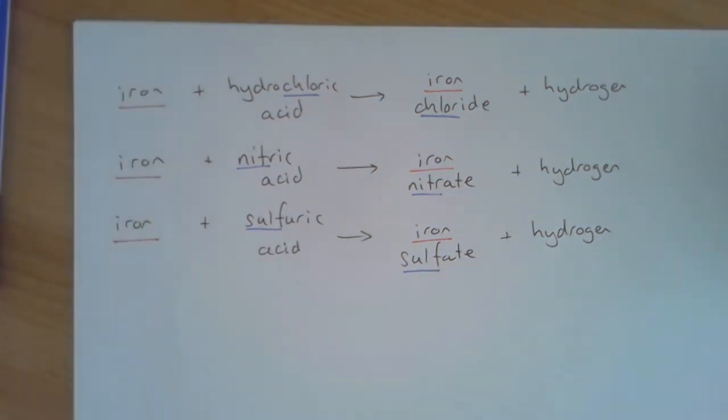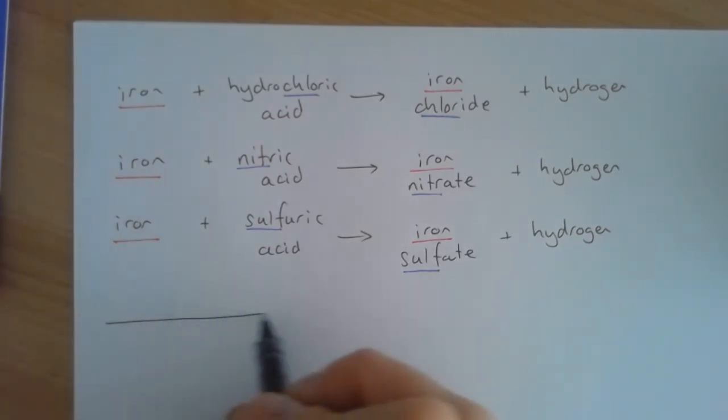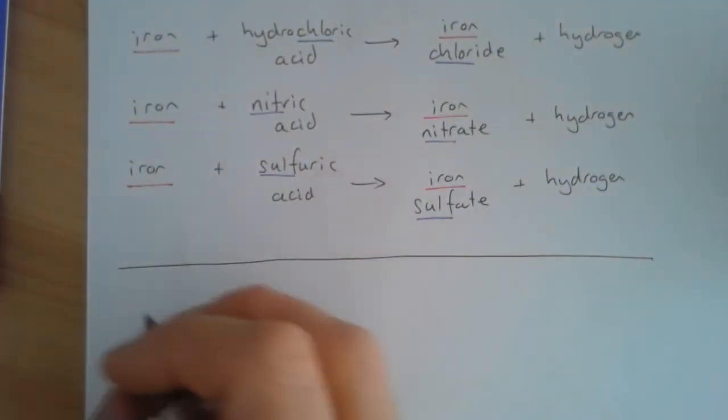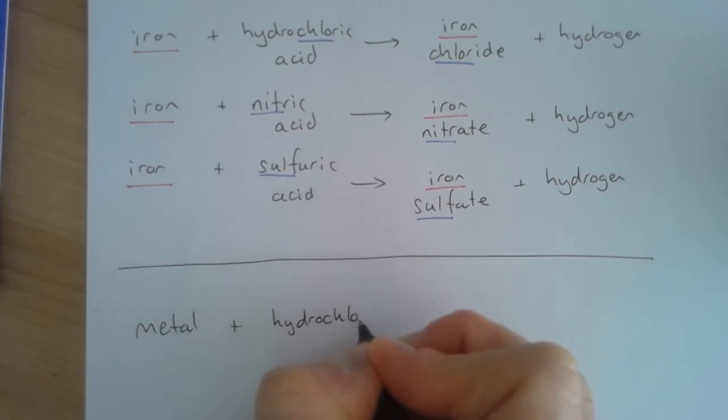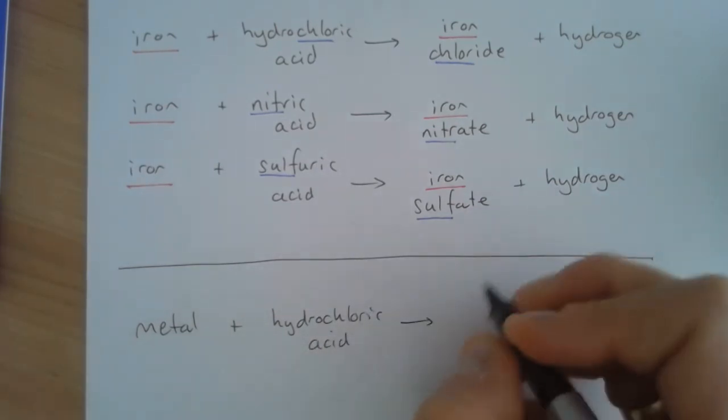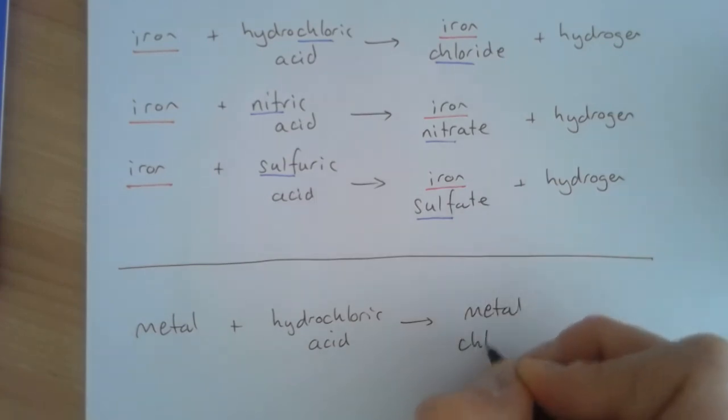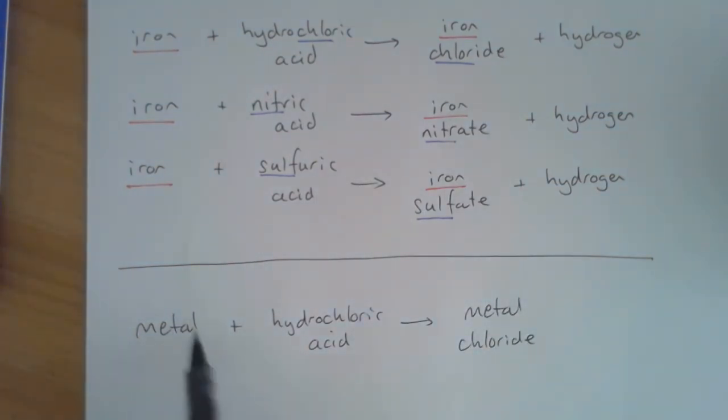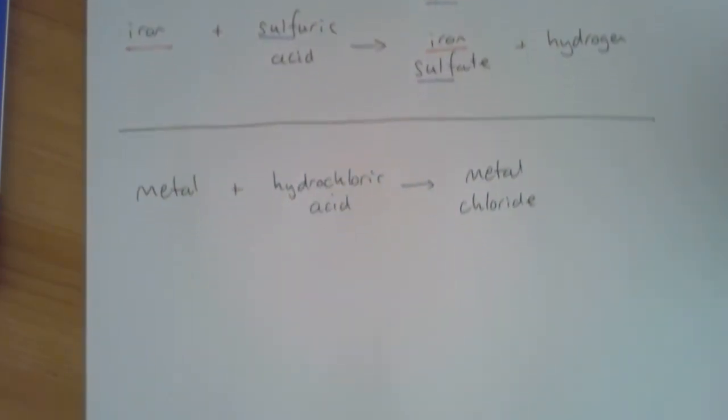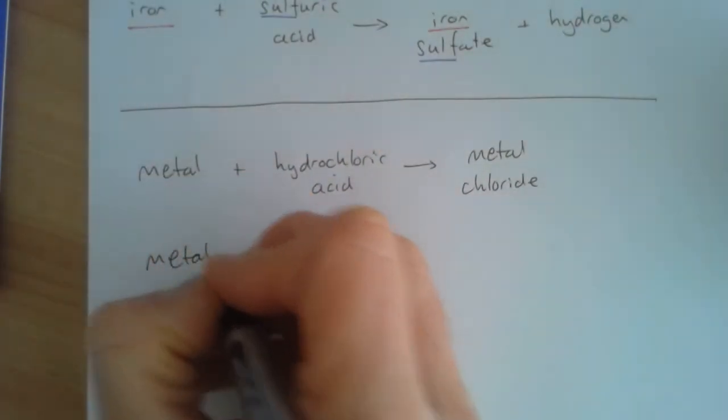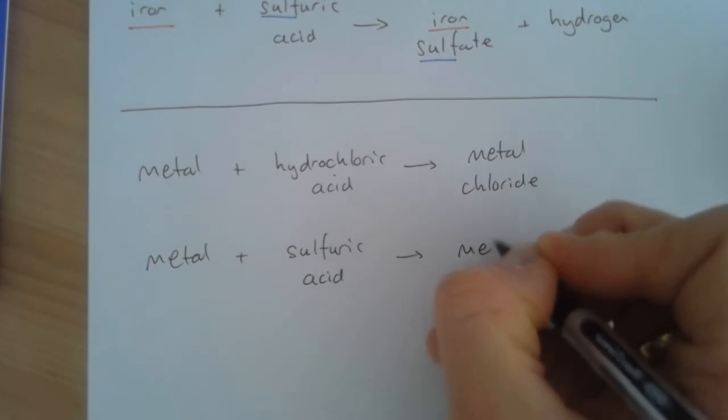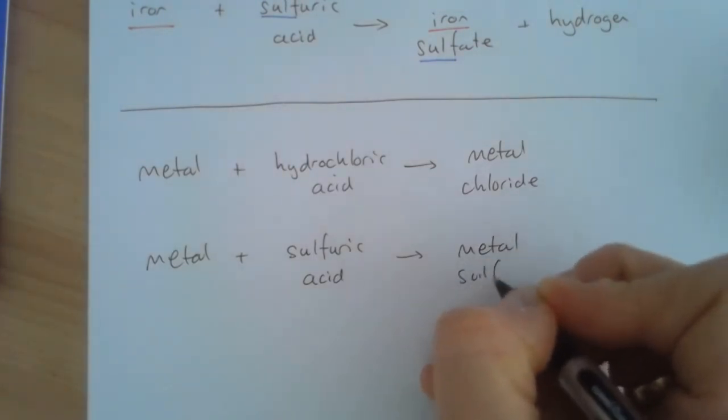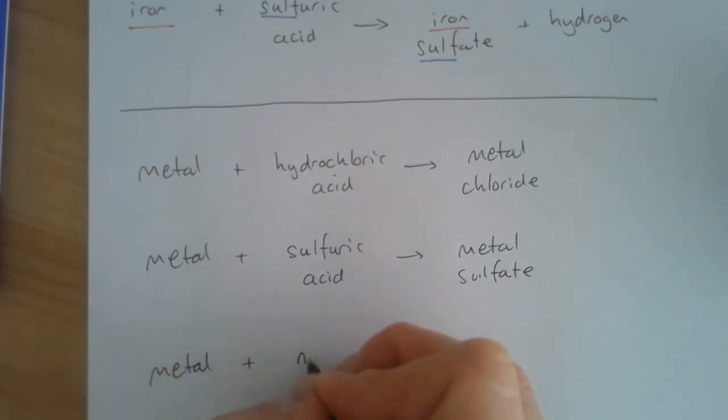If we were going to write a summary of our different salts made, then we could talk about any metal reacting with hydrochloric acid making a metal chloride. All we have to do is replace the word metal with any particular example of a metal. A metal and sulfuric acid makes a metal sulfate, and a metal and nitric acid makes a metal nitrate.